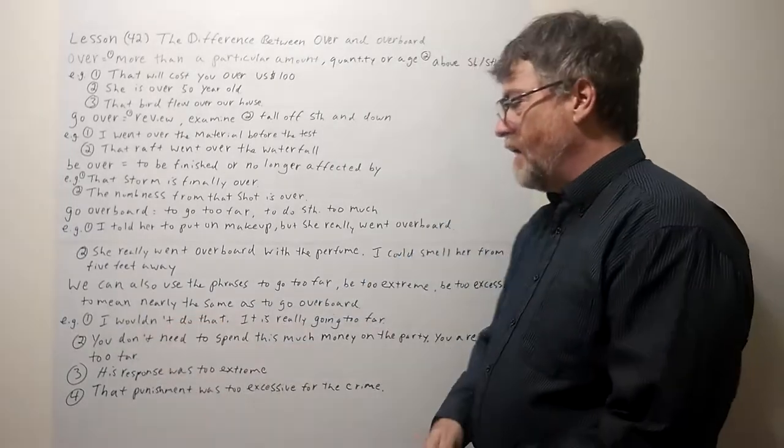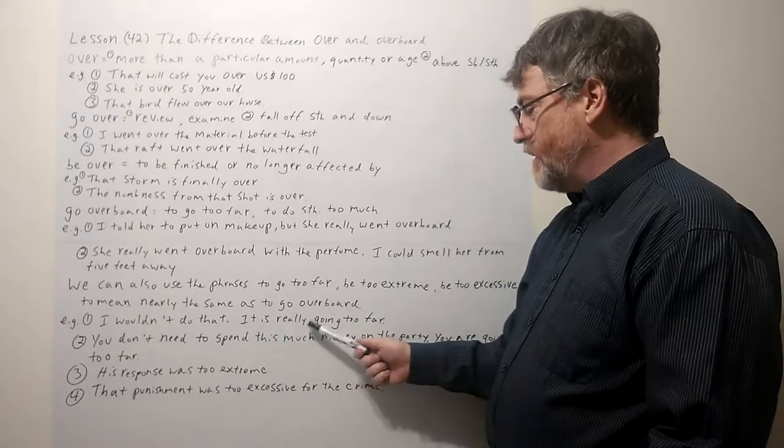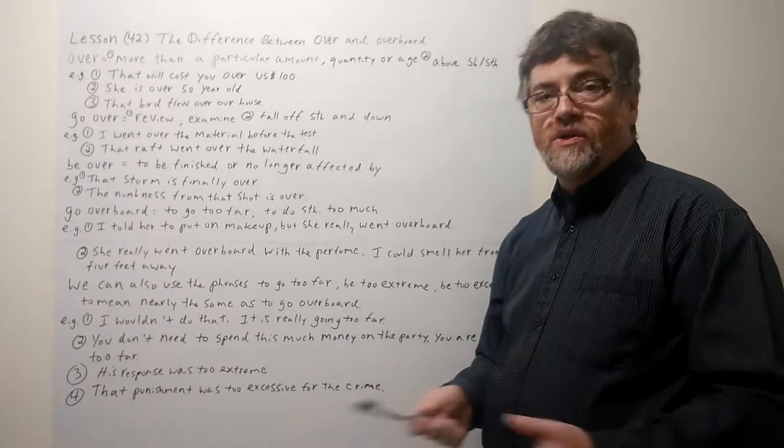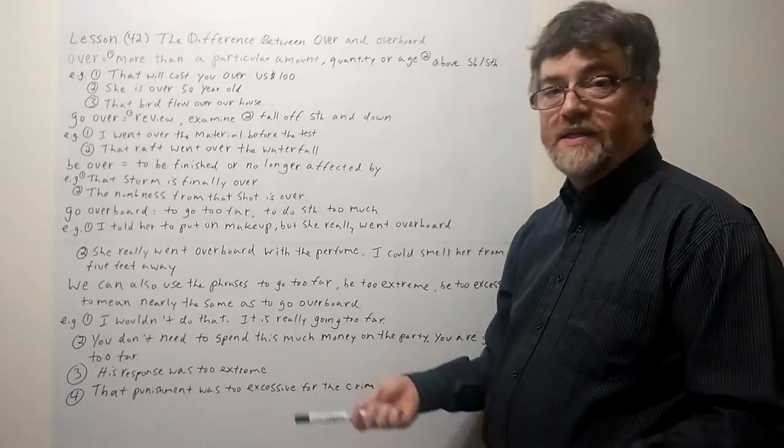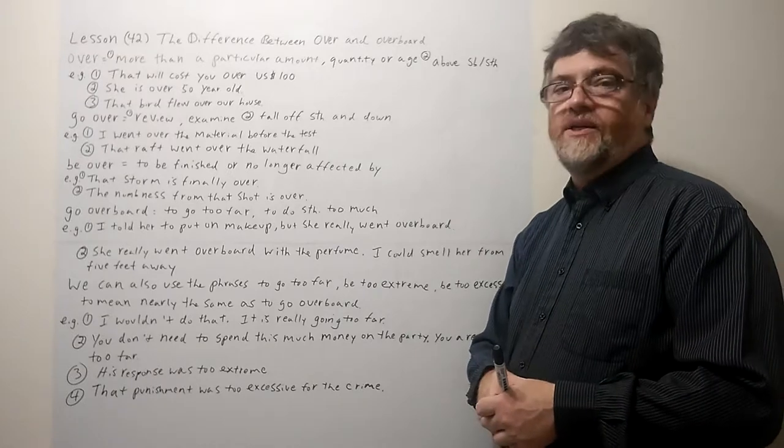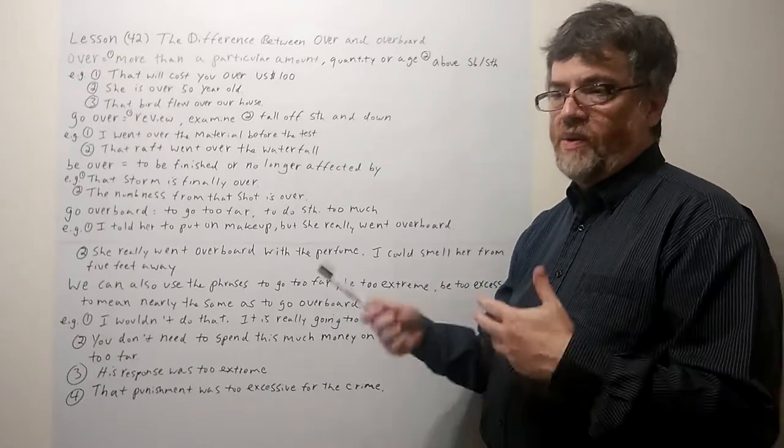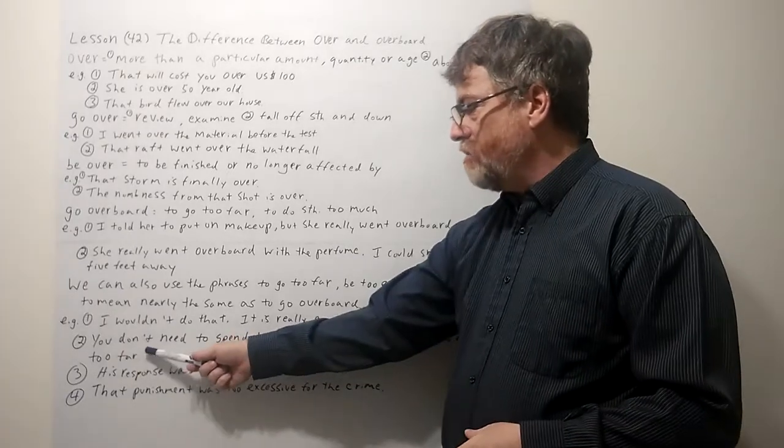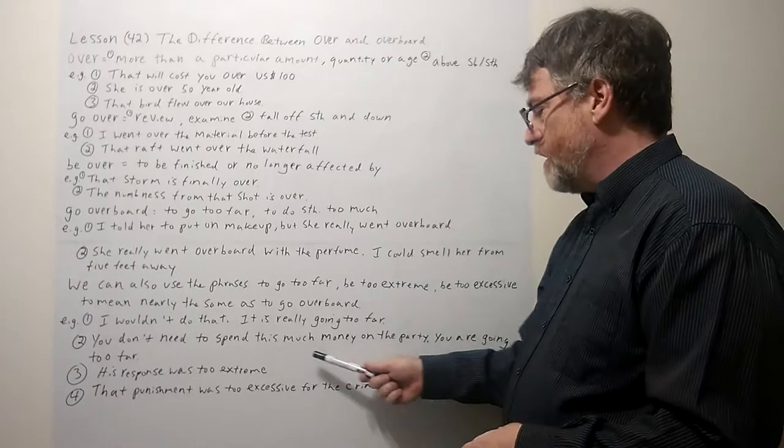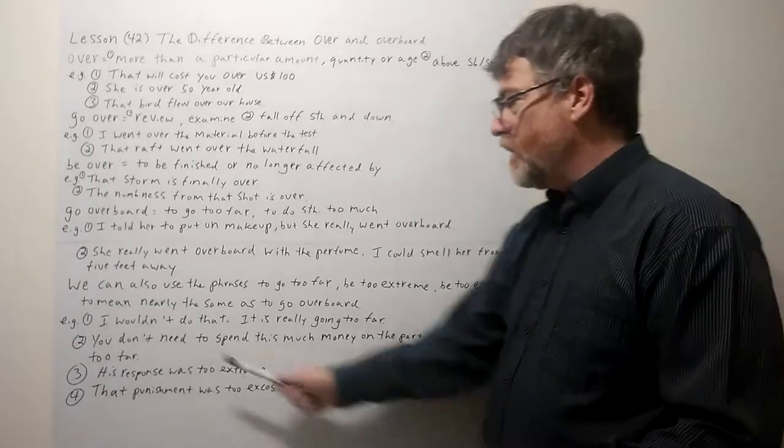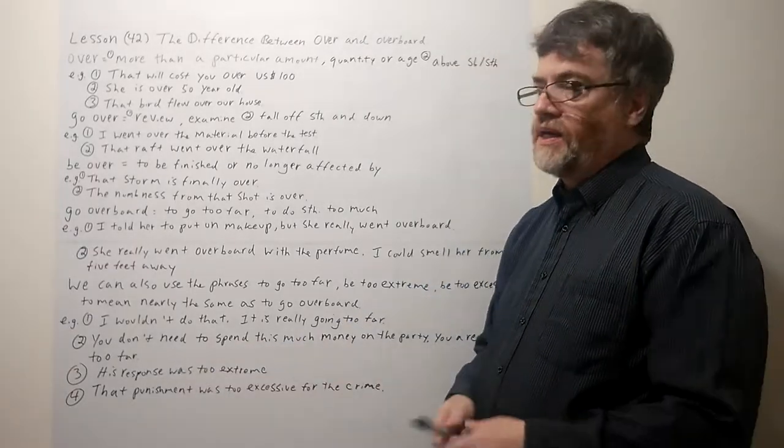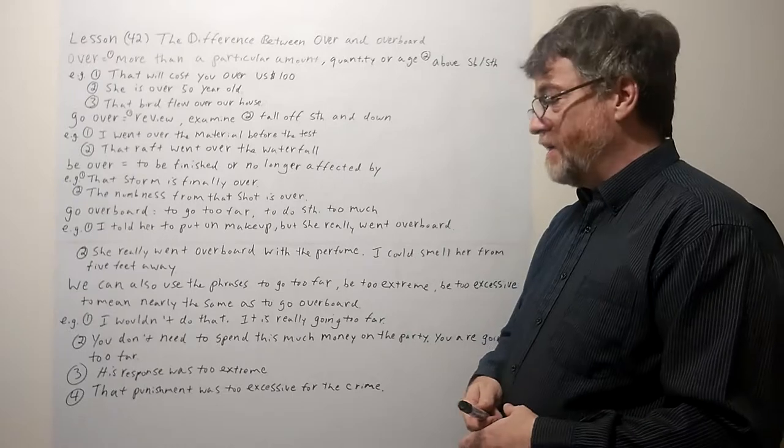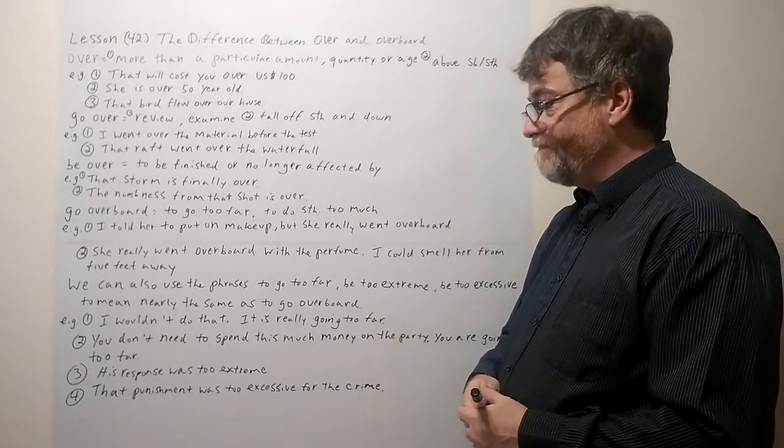Let's look at the first example here. I wouldn't do that. It is really going too far. Well whatever you're doing somebody feels like you're doing too much. Or maybe you're even possibly offending somebody. Or you're just doing something, you're just going where you shouldn't be going. You're going further than is necessary. Let's look at the second one. You don't need to spend this much money on the party. You are going too far. So you should spend less. Maybe it's starting to be excessive or too much. So you're going too far.